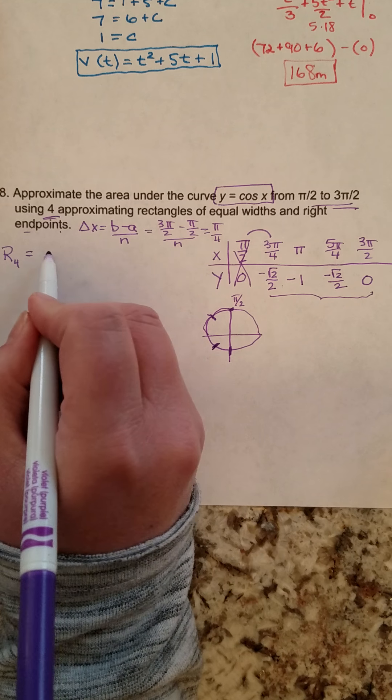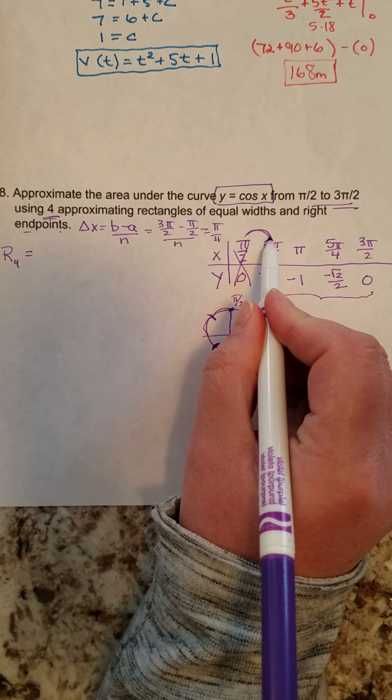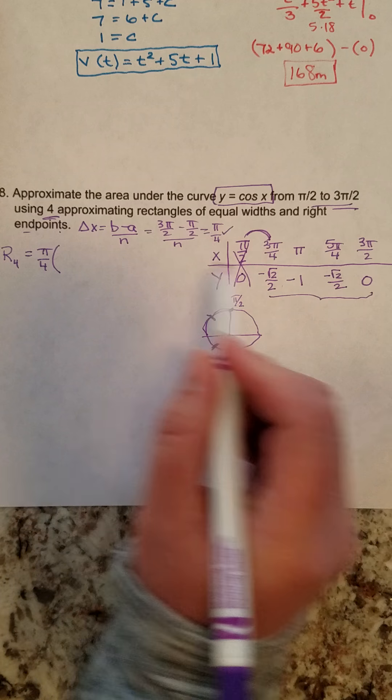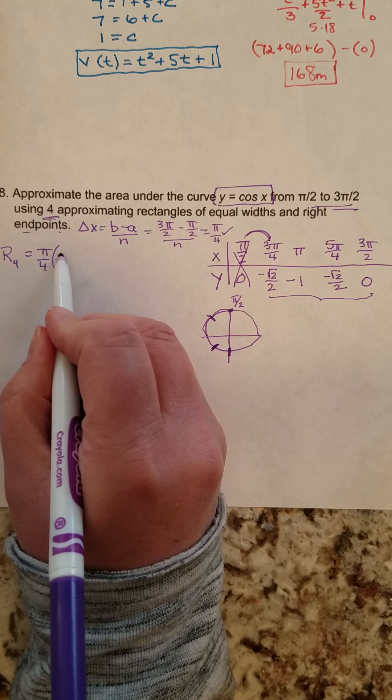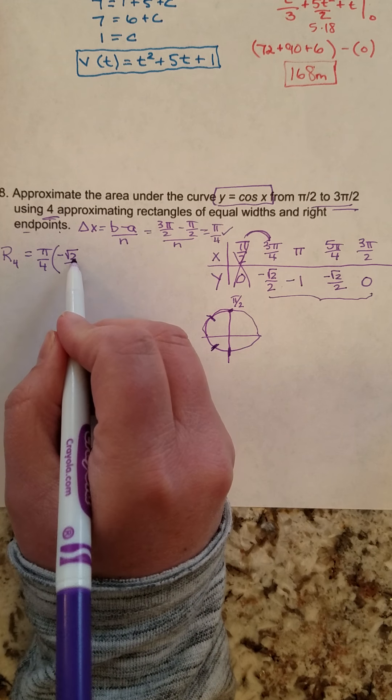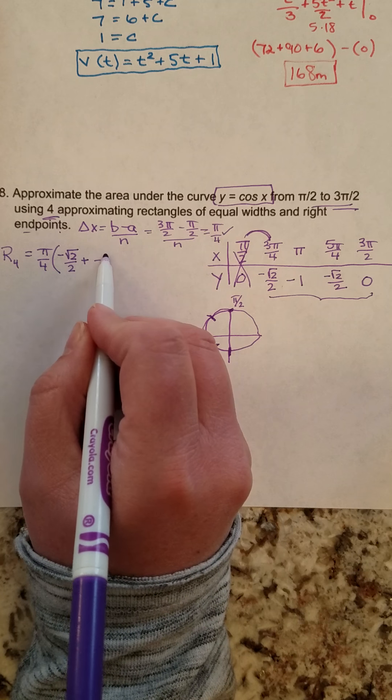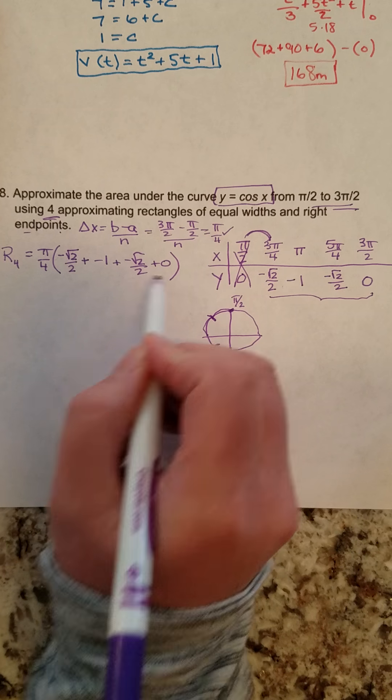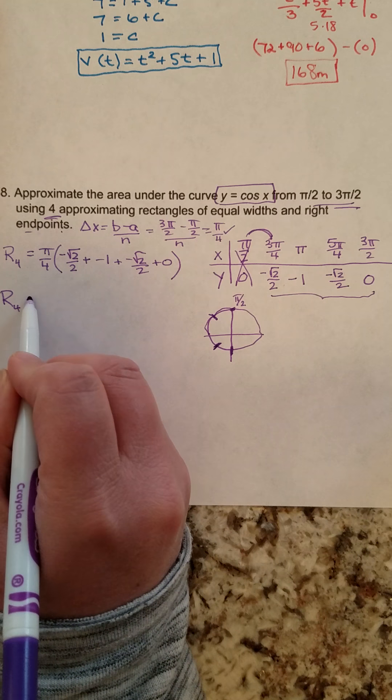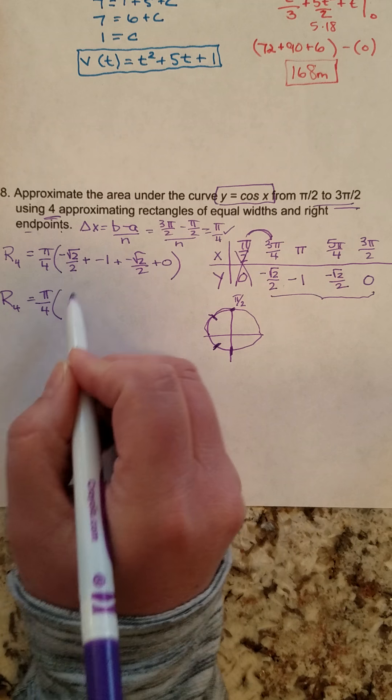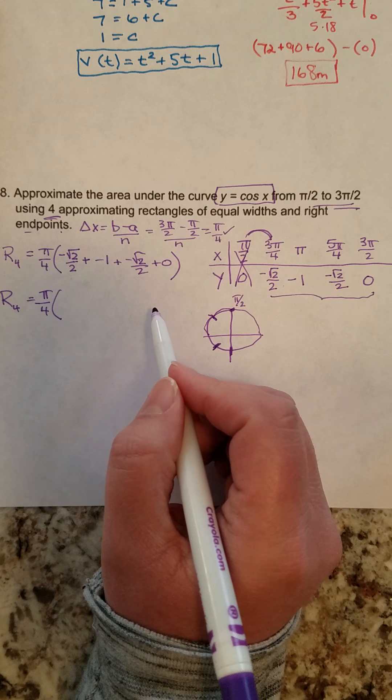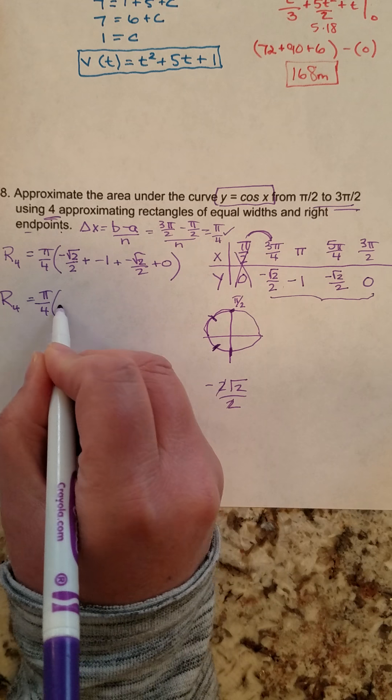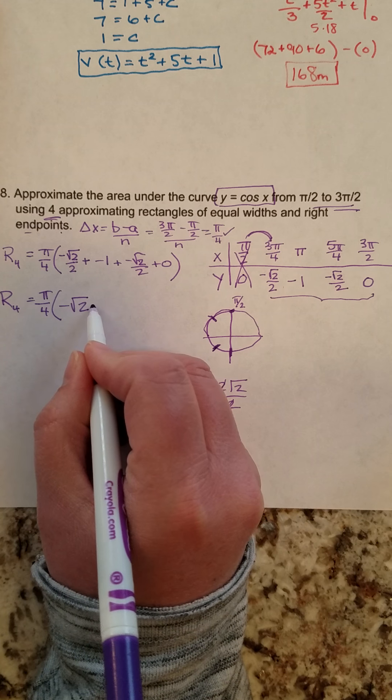And so I take whatever my width is from my x's, which again was right up here, pi over 4, and then times, and now I'm going to take each of these y values and add those together. Negative root 2 over 2 plus negative 1 plus negative root 2 over 2 plus 0. Doing a little bit of math here, negative root 2 over 2 plus negative root 2 over 2 is negative 2 root 2 over 2, which reduces down to negative root 2, and then minus 1.